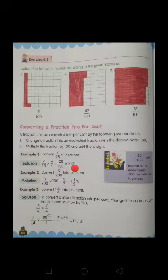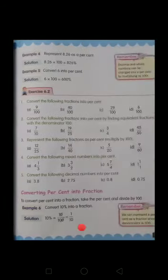Now example 3. Here is a mixed fraction given: 1 whole 3 upon 4. First convert it into improper fraction. That is 7 upon 4, and then multiply by 100. So the answer is 175 percent.